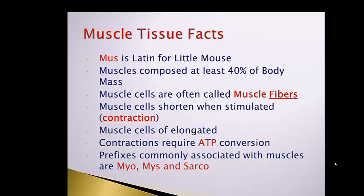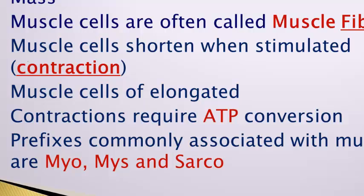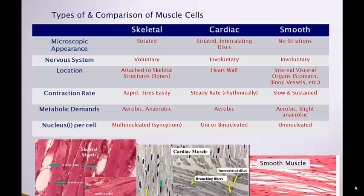There are some common prefixes associated with muscle tissue: mis, myo, and sarco. When you see those prefixes, they are always tied into the muscular system. There are three types of muscle tissue: the first being skeletal, the second being cardiac, and the third being smooth.